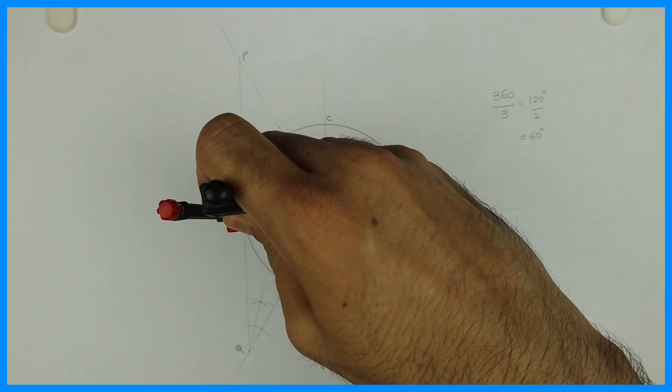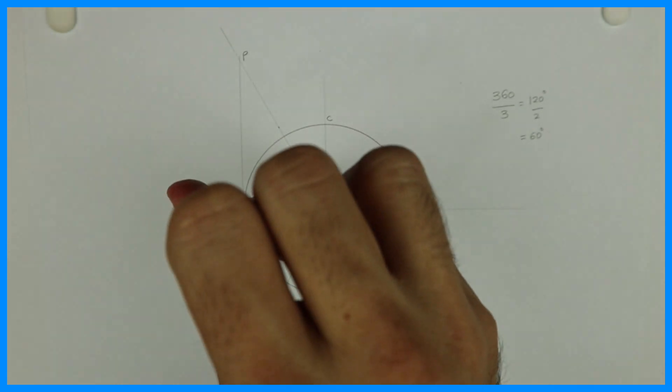Then you take R to A and you draw a circle.